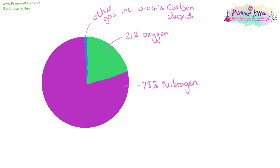The air we breathe is made up of lots of different gases: predominantly nitrogen gas with about 20-21% oxygen, and then lots of other gases including a small amount of carbon dioxide.